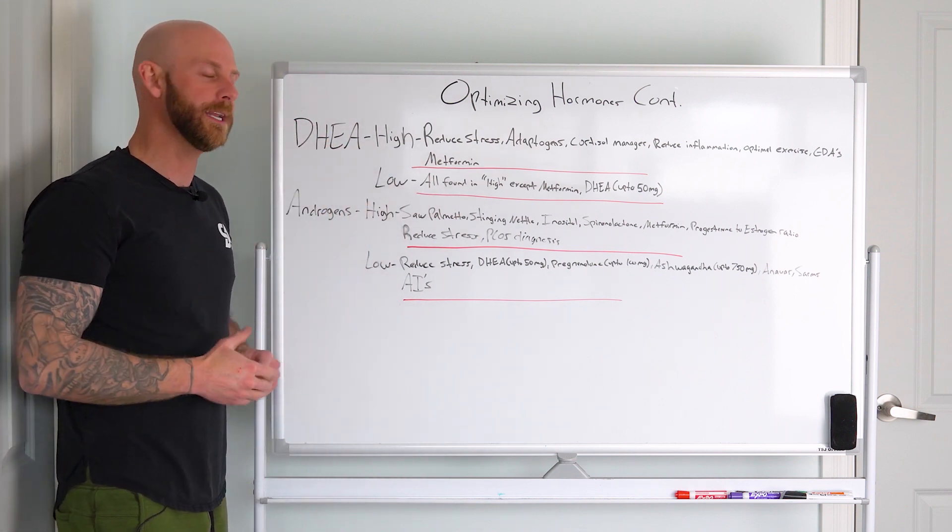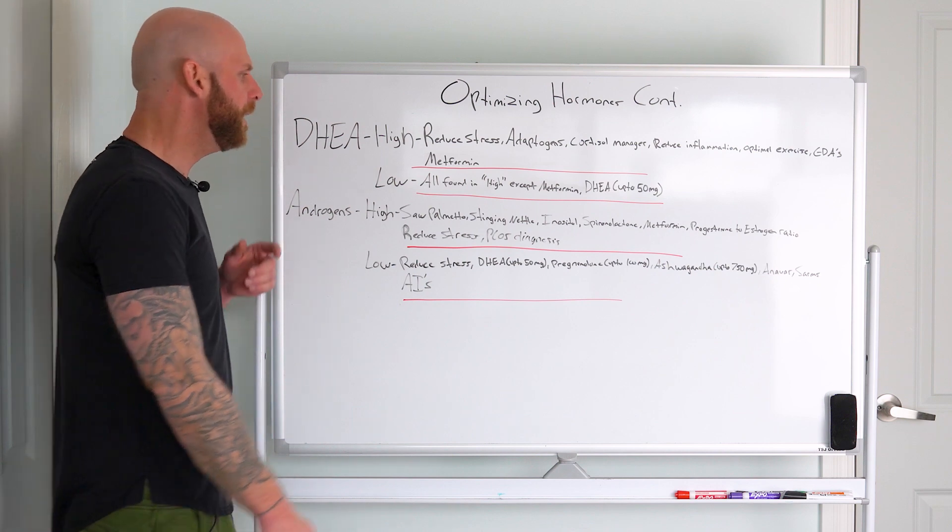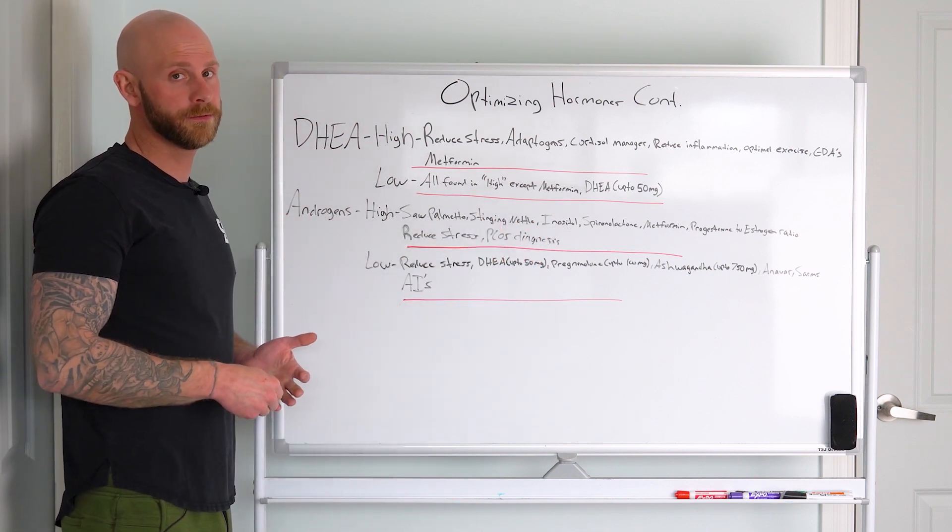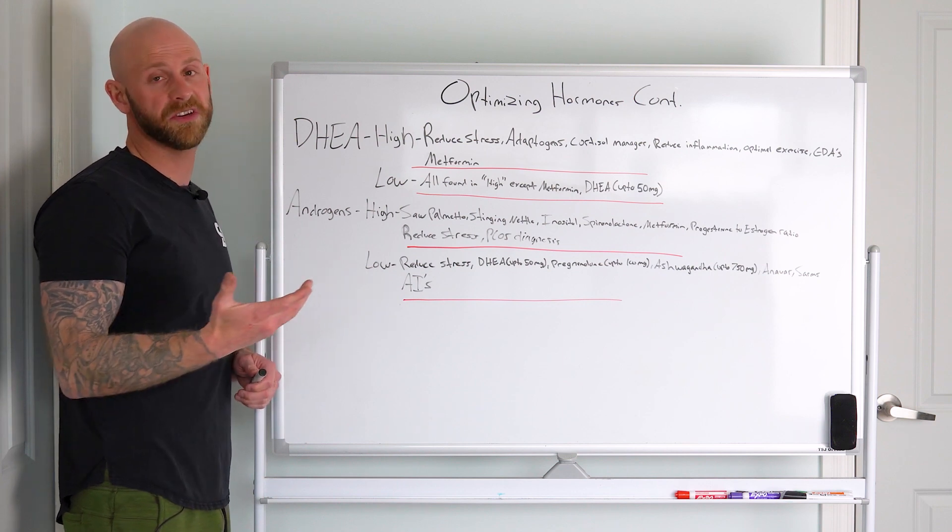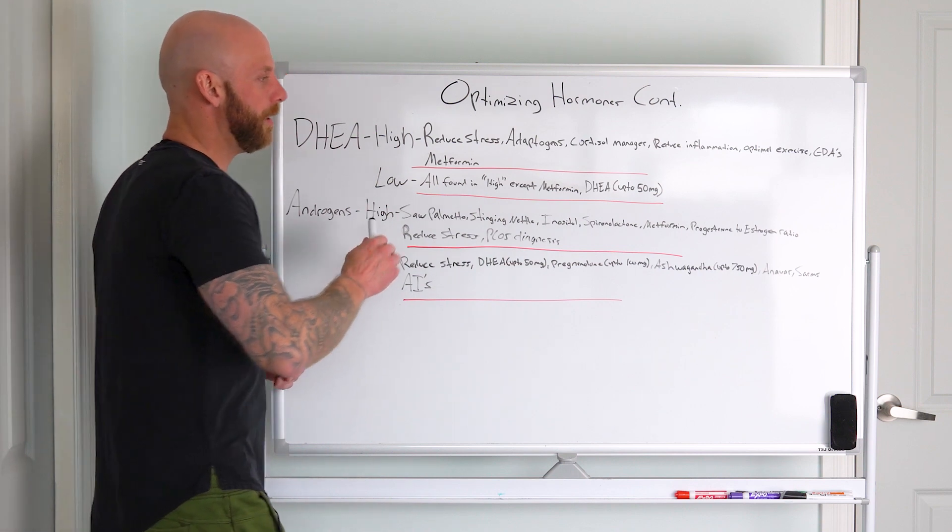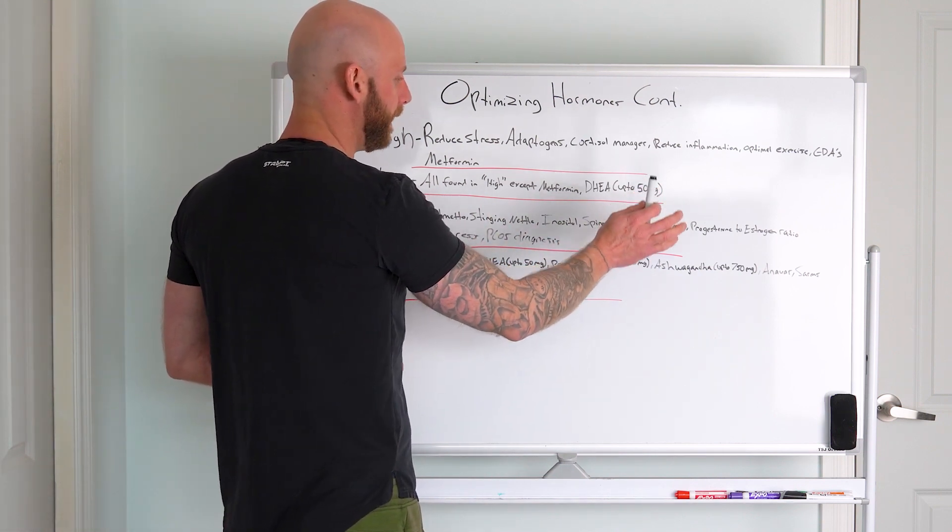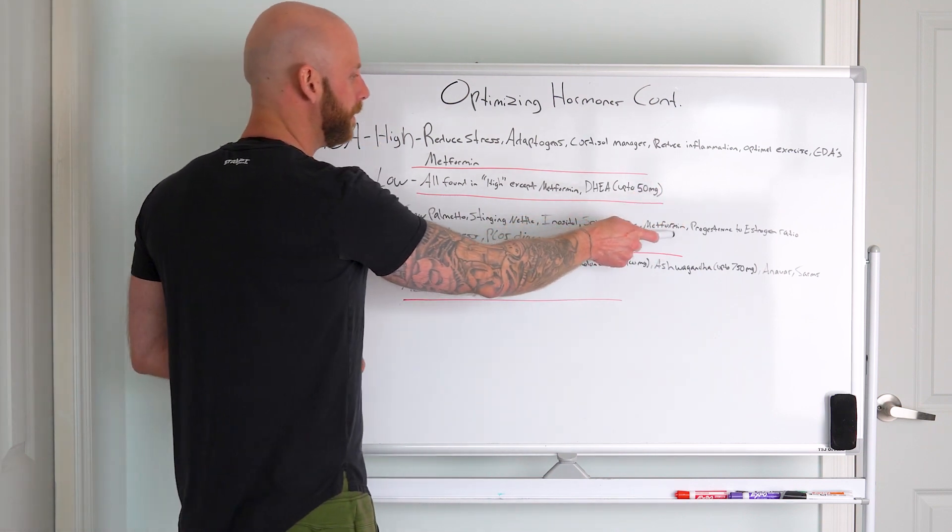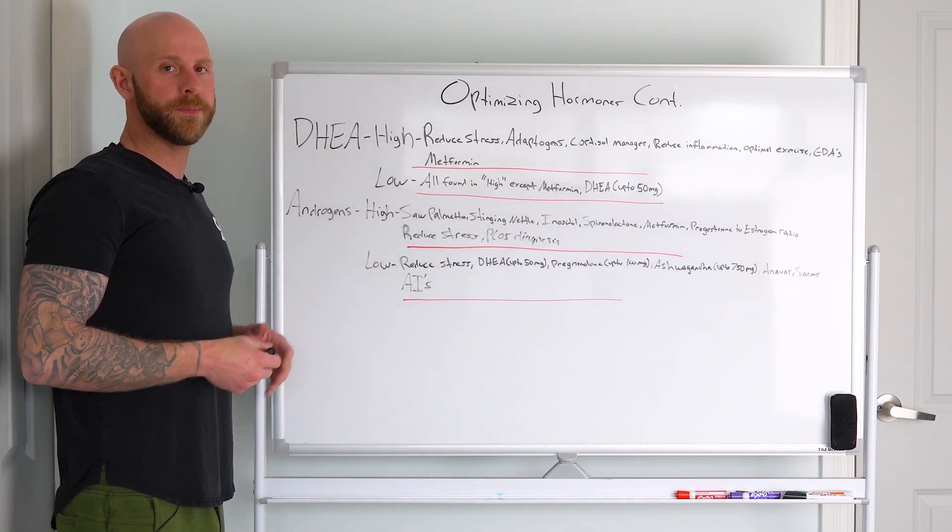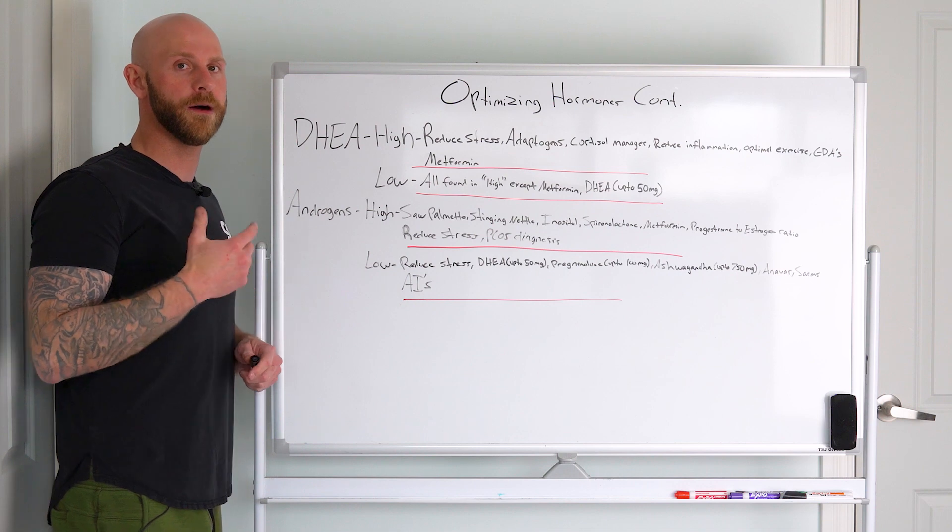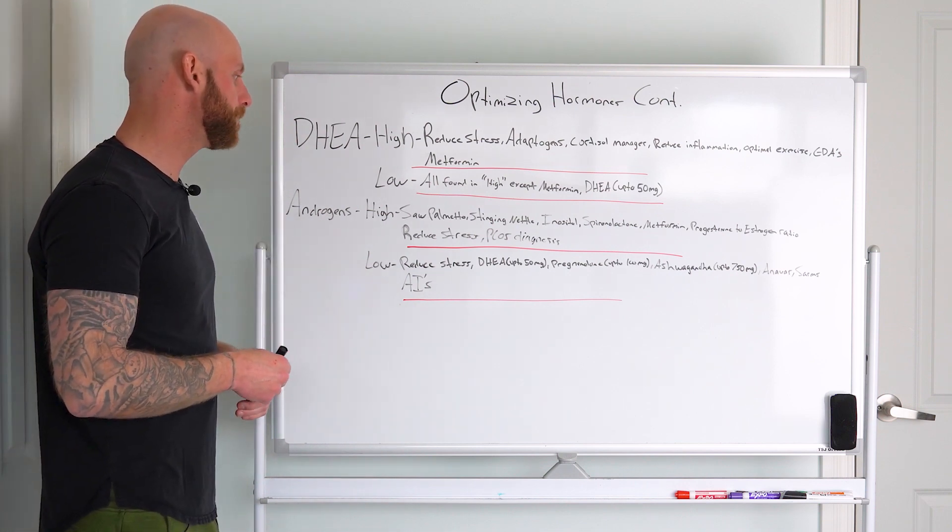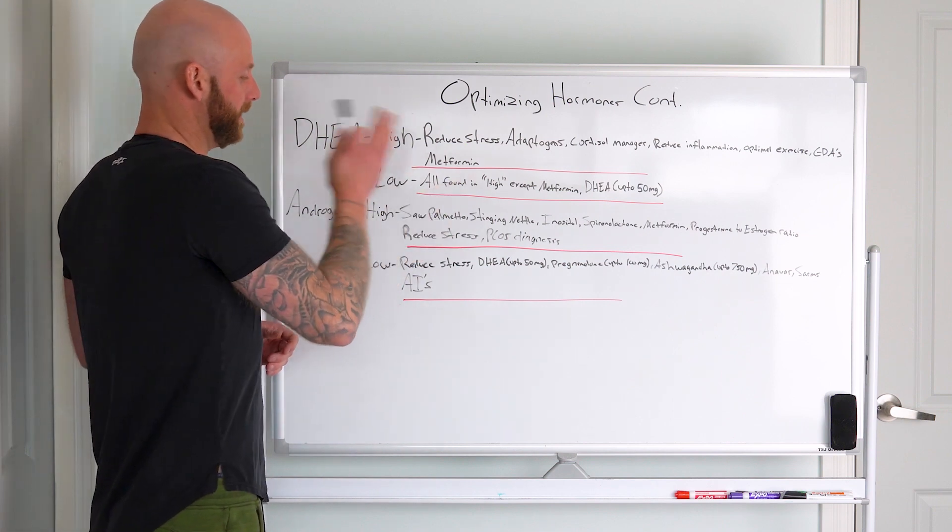Inositol is also great for replenishing serotonin neurotransmitter receptors, so that's really good there too. Inositol's got quite a few benefits for sure. Spironolactone and metformin - again, really consult your physician, but spironolactone is good for women with PCOS. You can use that acutely to help lower those androgens and address the root cause, as well as metformin.